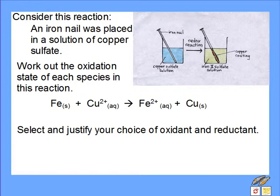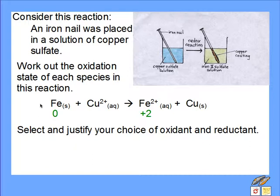Looking at an example: an iron nail is placed in a solution of copper sulfate. Iron is a grey metal, and copper sulfate solution is a blue solution. When these two things react, we end up with a pink-brown copper coating on the iron nail, and the solution gradually changes colour from blue to a pale green. Iron in elemental form becomes Fe2+, so we've got an increase in oxidation number — and an increase in oxidation number is oxidation. Likewise, copper 2+ undergoes reaction to form copper metal, going from plus 2 to zero in oxidation numbers, so Cu2+ is undergoing reduction.